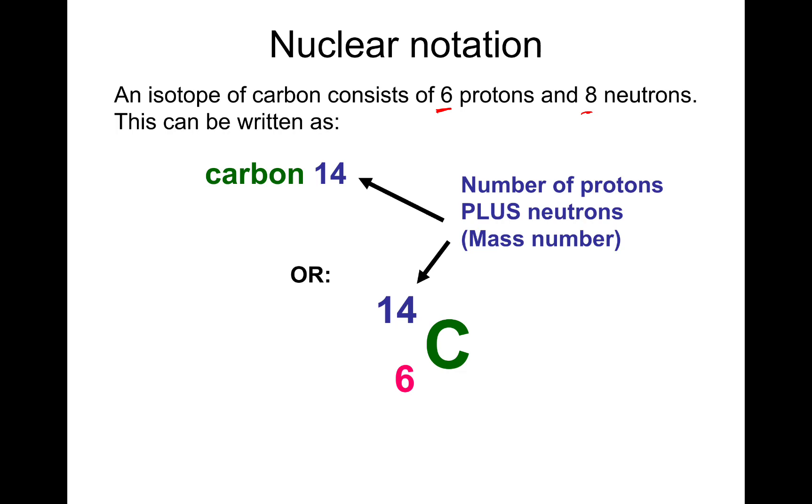Another way of notating the isotope is to write it like this. So you have the element symbol, which is the C. And then above it, the big number, 14, that's the mass number. And the bottom number is the atomic number, which is the number of protons. So they're the two ways of writing it. In your exam, you might have to do calculations involving the bottom one.